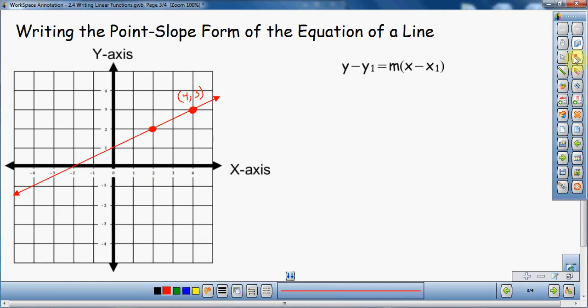So here we go. 4, 3. I have a point. My point is (4, 3). That's the first thing I needed to find. Now I need to find out what the slope is.